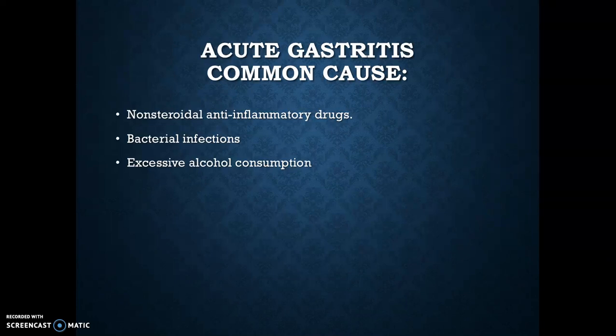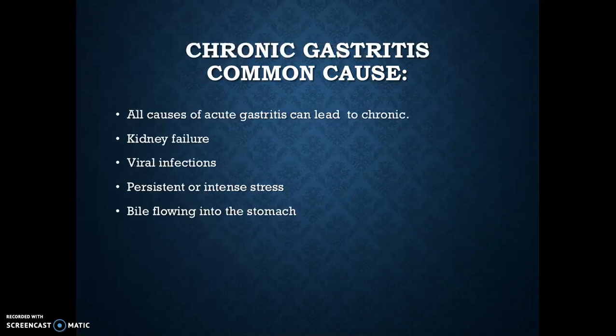Some causes of acute gastritis include non-steroidal anti-inflammatory drugs, bacterial infections, or excessive alcohol consumption. All the causes of acute gastritis can also lead to chronic gastritis, but additional causes of chronic gastritis include kidney failure, viral infections, persistent or intense stress, or bile flowing into the stomach.